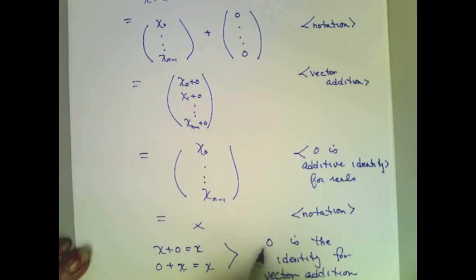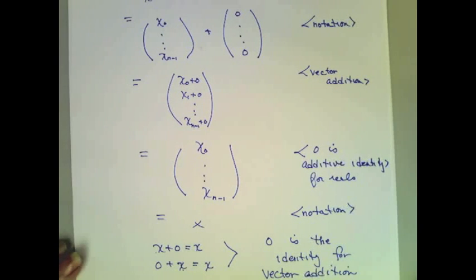So, a vector whose components are all 0s is the additive identity for vector addition.